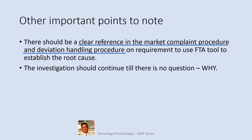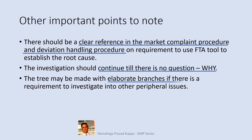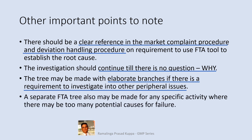The investigation should continue until there are no further questions — why did it fail? The tree may be made with elaborate branches if there is a requirement to investigate peripheral issues. If the complexity of the investigation is high, divide the tree into separate trees for ease of handling. A separate FTA tree may also be made for any specific activity where there may be too many potential causes for failure.